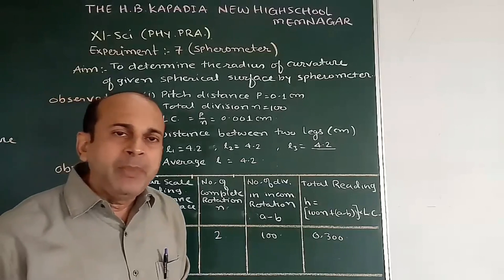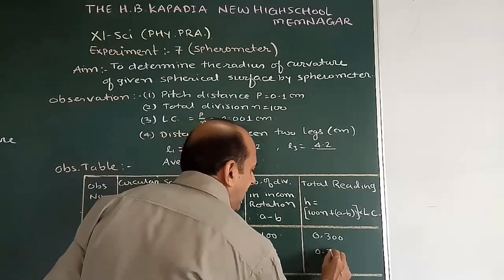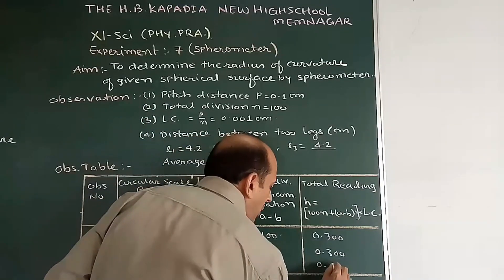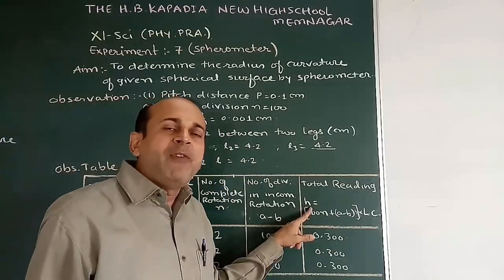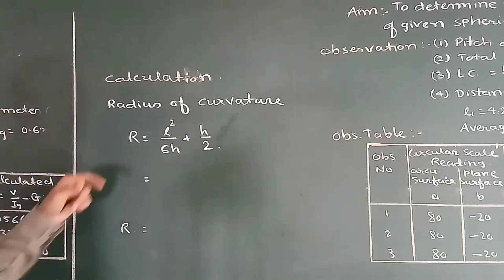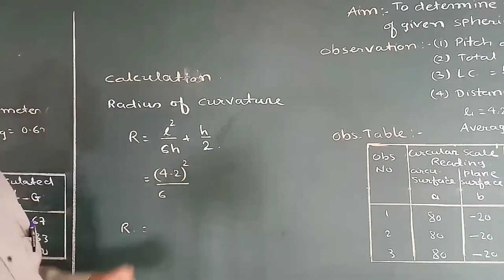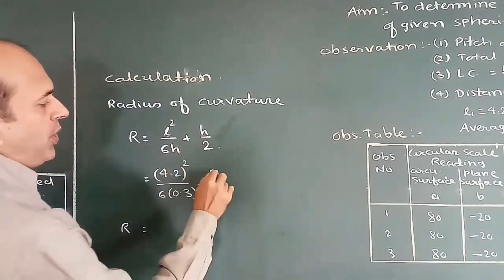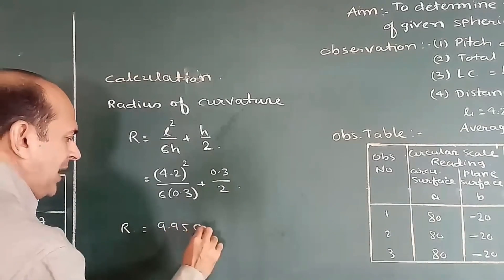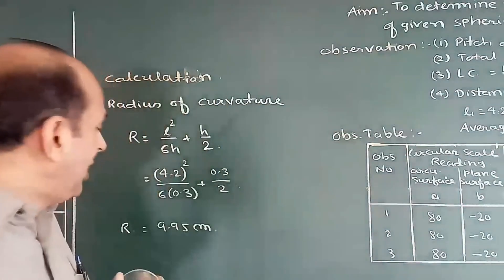The second and third readings give the same answer: 80, minus 20, 2 rotations, difference 100, giving H = 0.300 cm each time. Now substituting into the formula: R = L² / 6H + H / 2 = (4.2)² / (6 × 0.3) + 0.3 / 2. Calculating, we get R = 9.95 cm. So the radius of curvature of this spherical surface is approximately 10 cm, that is 9.95 cm.